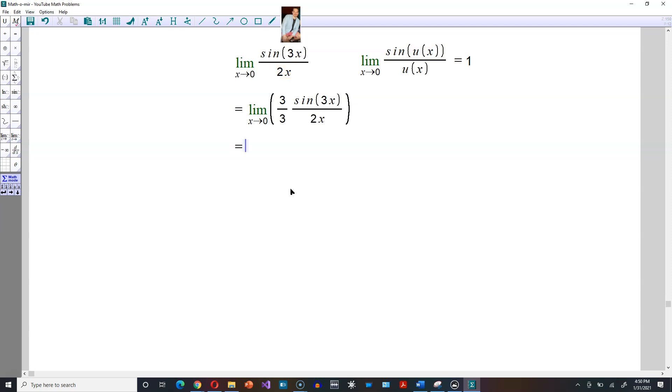Then from here I can regroup as follows. The limit as x approaches 0, and within the parentheses I'm going to regroup it, so it's going to be 3 over 2, and there I'm going to have the sine of 3x, and I'm going to take the 3 and put it with x, so it's going to be 3x. So I put this 2 in place of the 3 on the bottom, and I put the 3 on the bottom in place of the 2. That's allowed by the basic rules of numbers.